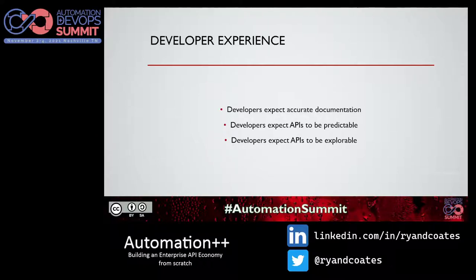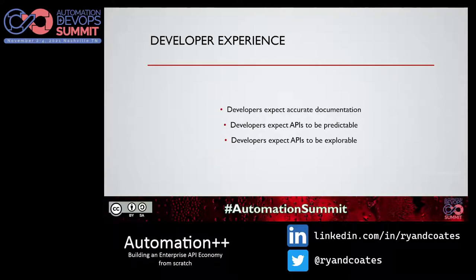We also expect APIs to be predictable. If I'm using a suite of APIs — say the AWS or Azure API footprint — there's a certain expectation that when I move from the S3 API to the EC2 API, certain things behave the same. The name property means the same thing; an ID is potentially the same data type. These are things a developer expects. The investment made in one of your APIs pays off when using all your other APIs, making them easier to consume.